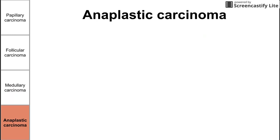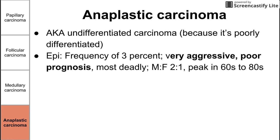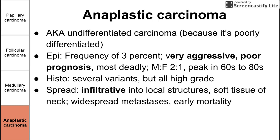Lastly, there is the rare anaplastic carcinoma, also called undifferentiated carcinoma because it is so poorly differentiated. These are very aggressive with a very poor prognosis — the most deadly of the four — and occur twice as frequently in men, typically in patients in their 60s to 80s. There are several histological variants, but all are high grade. They are very infiltrative into local structures, especially the soft tissues of the neck, often show widespread metastases, cause early mortality after diagnosis, and do not take up radioiodine.